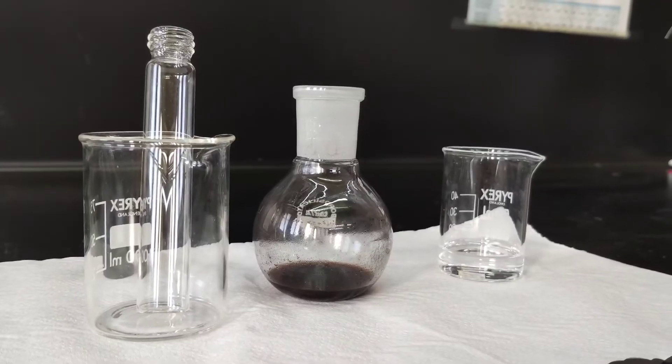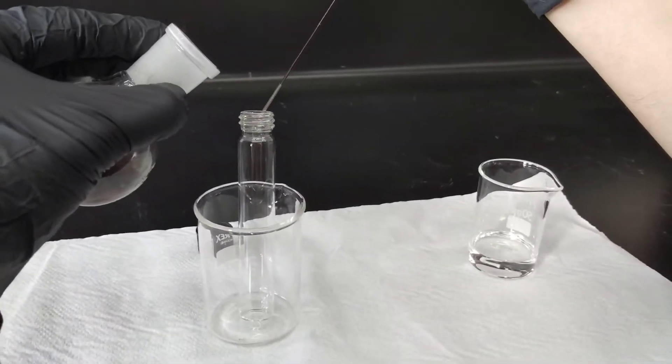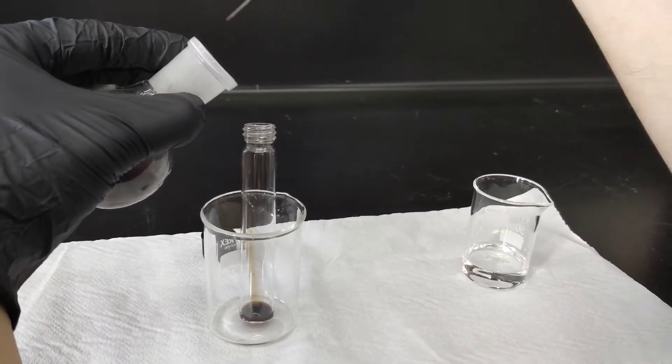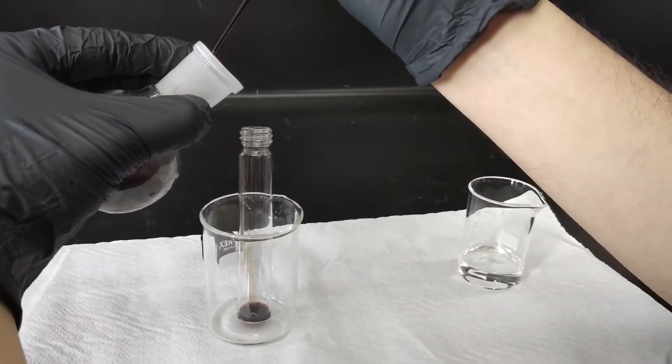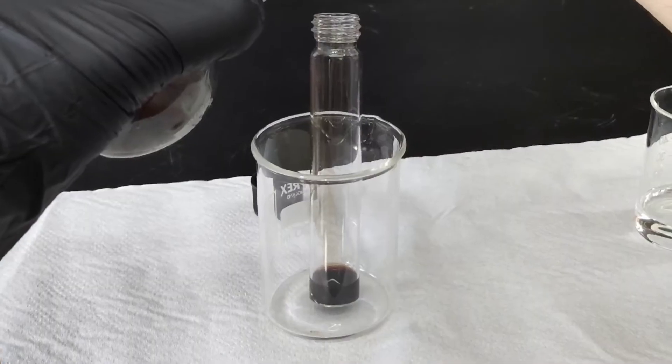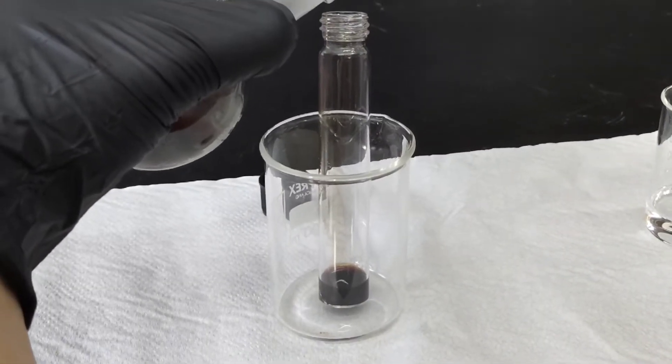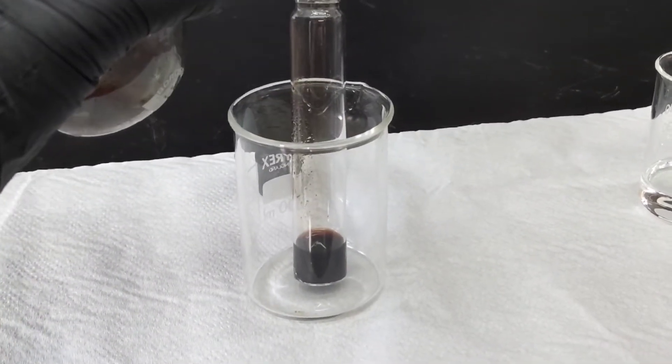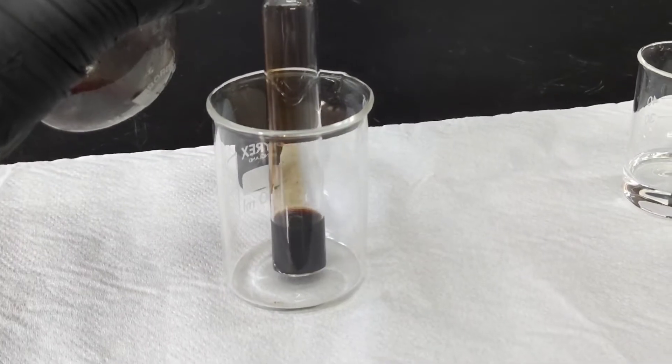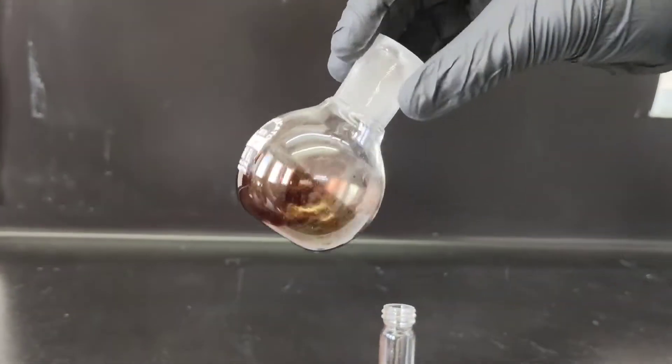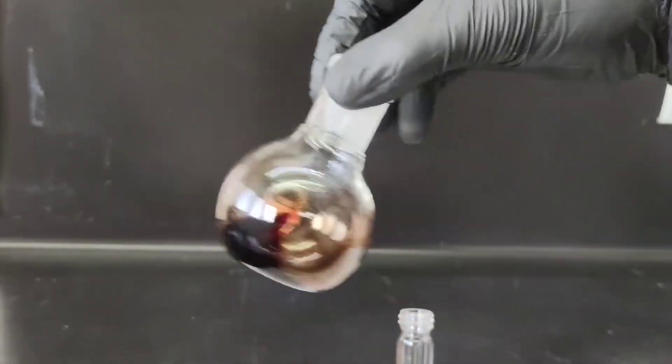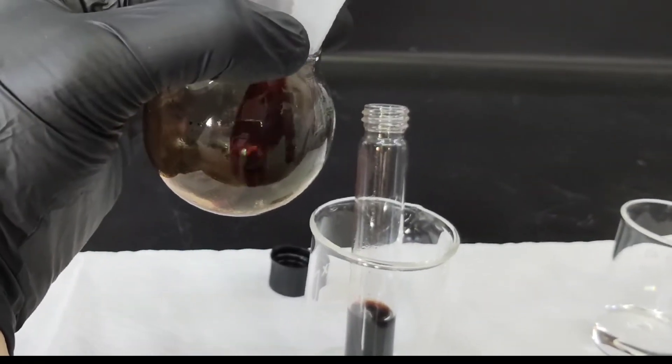What we do now is transfer the contents of the round bottom flask into a long vial using a pasteur pipette and slowly pour the contents. You can see there's already solid material but we are going to re-dissolve that with some more DCM in order to achieve a slower recrystallization.